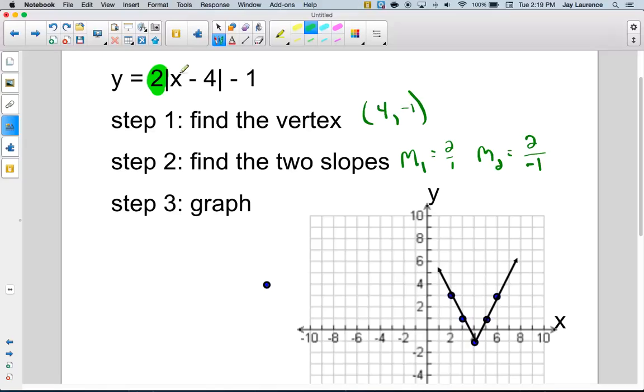If it's bigger than 1, you're going to get an acute angle because it's rising more than it's running. If it's a fraction between 0 and 1, like 1 third or 2 fifths, it's going to run more than it rises and you'll get an obtuse angle. All right. Pretty simple stuff.